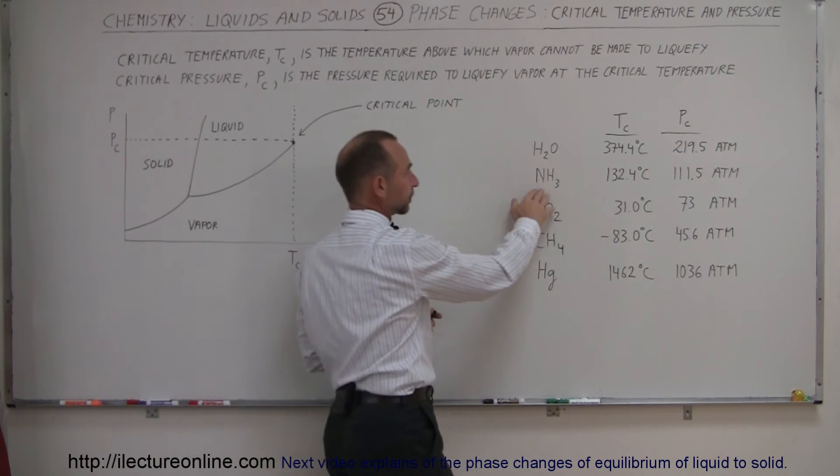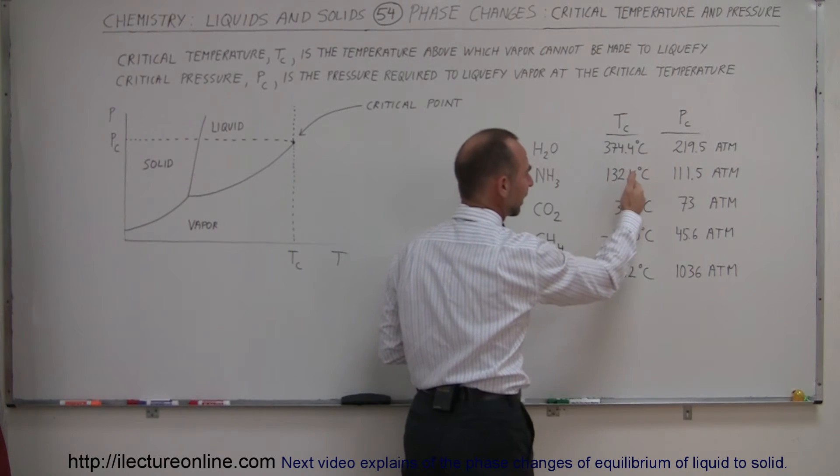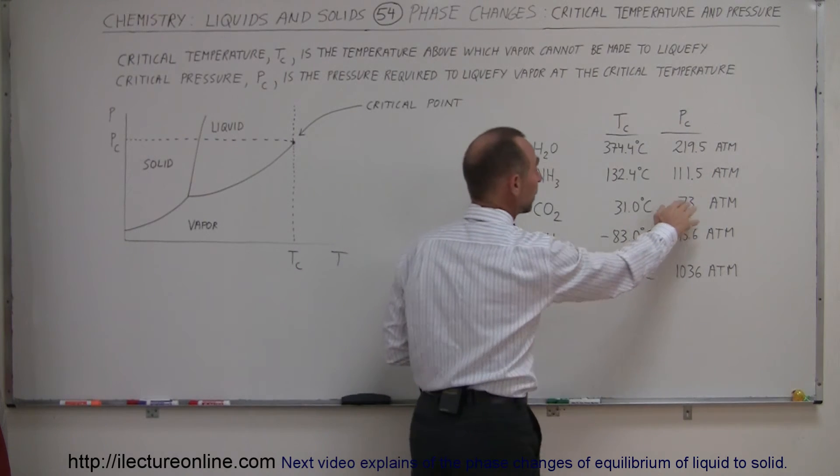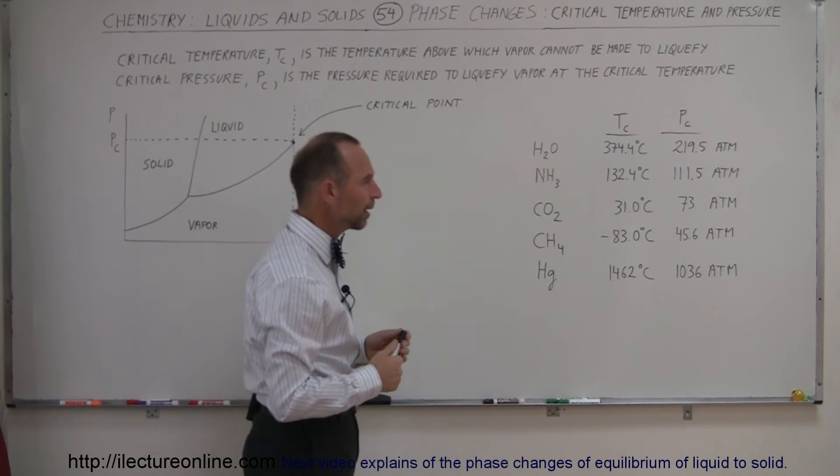For ammonia, 132.4 degrees centigrade is the critical temperature. Anything higher than that, regardless of the pressure applied, it will not turn into a liquid. The critical pressure is 111.5 atmospheres, so again, enormous amount of pressure.